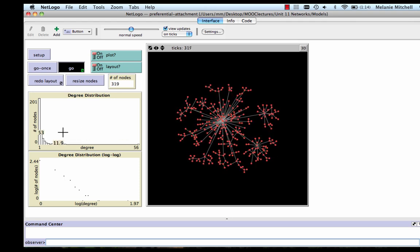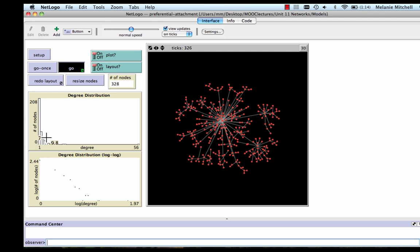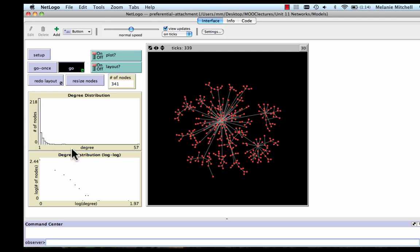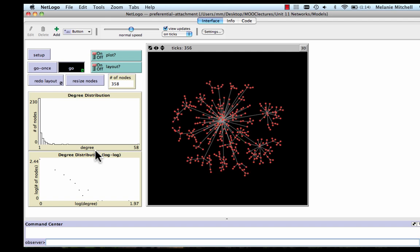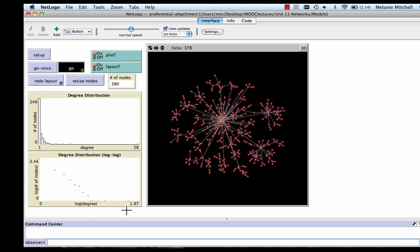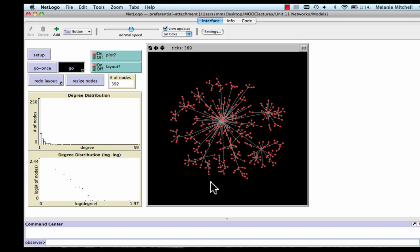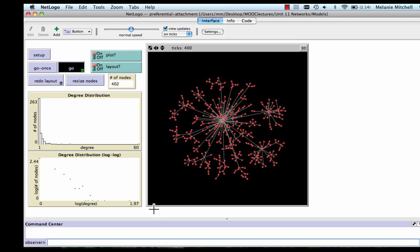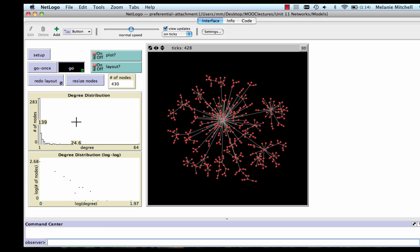And you can see the degree distribution here, which has the characteristic power law looking shape. And when it's plotted on a log-log plot here, it's making a straight line. And as more and more nodes are added, these will look more and more like actual power laws.